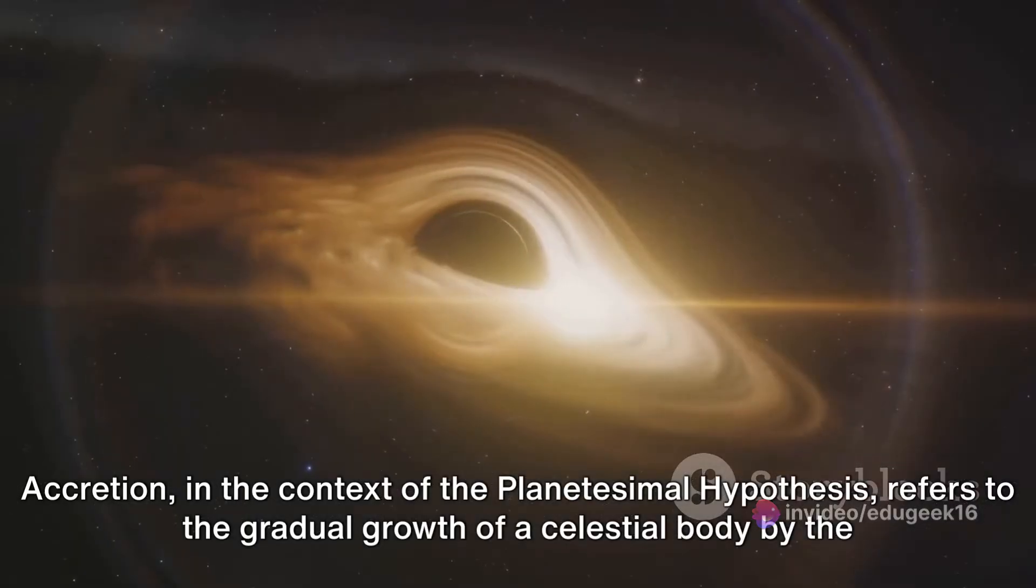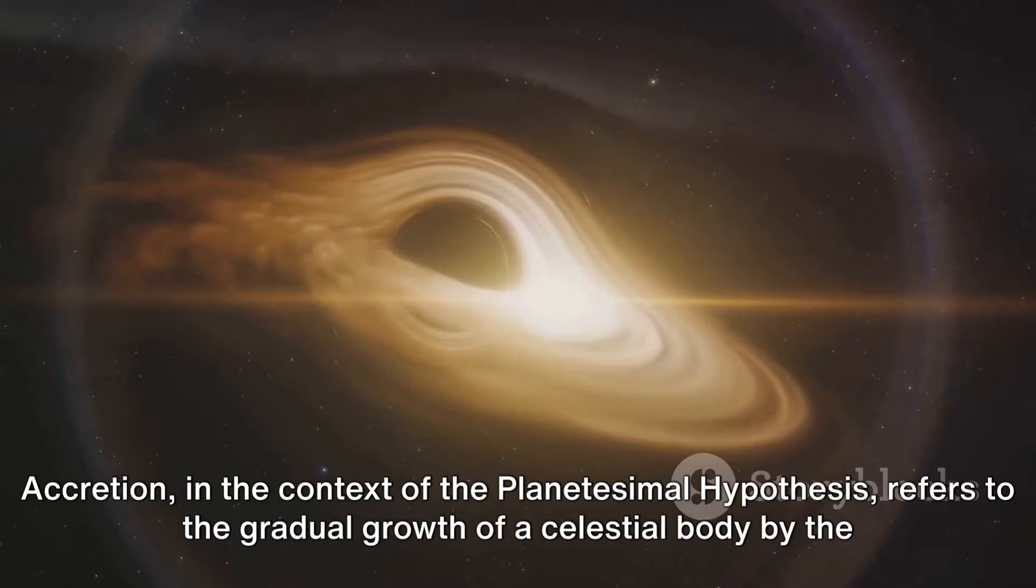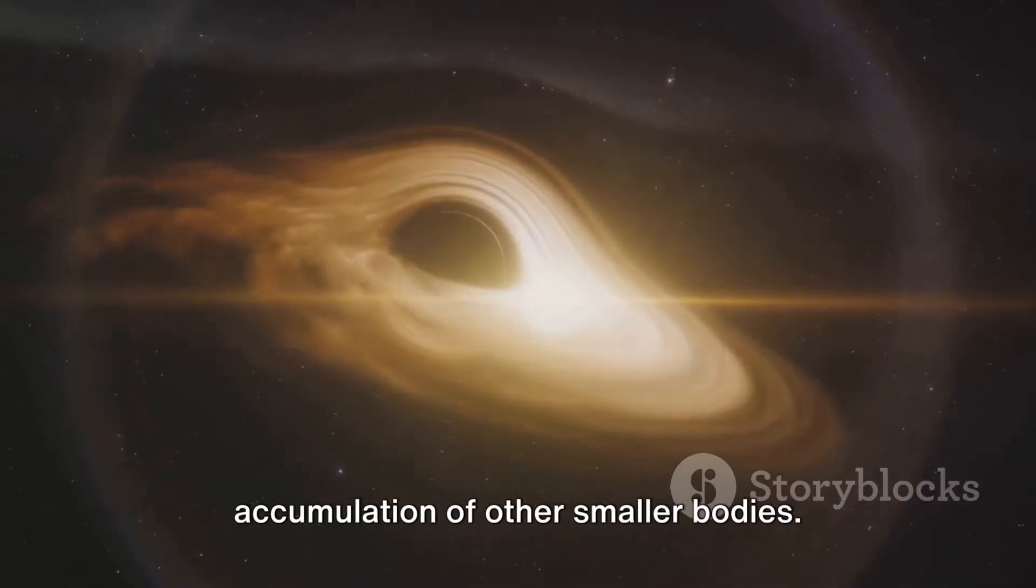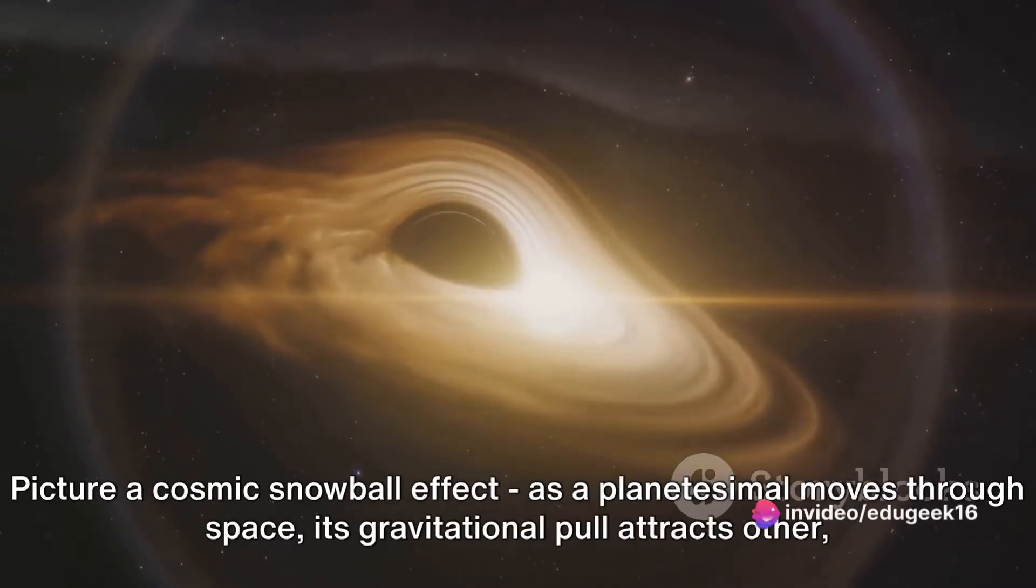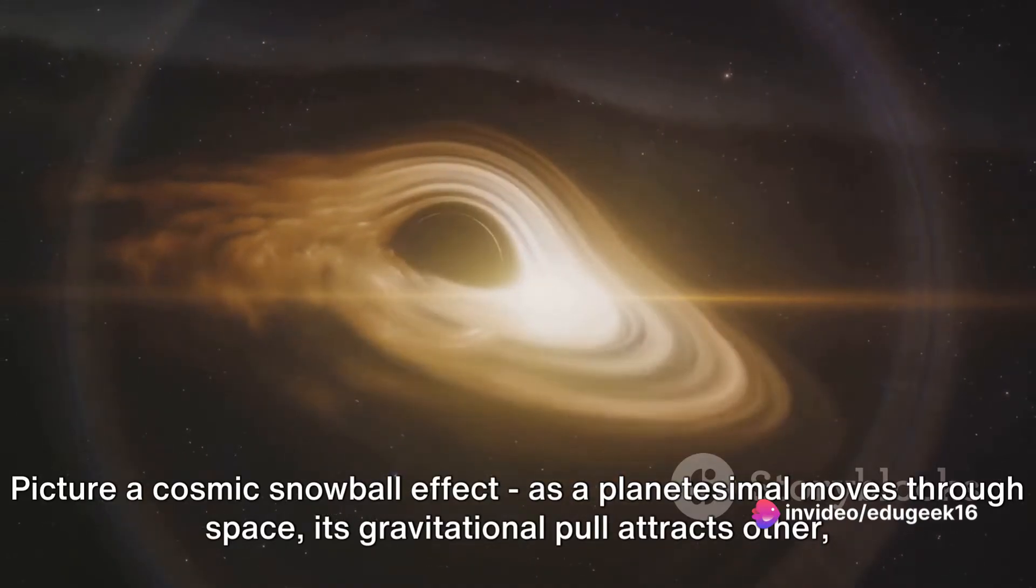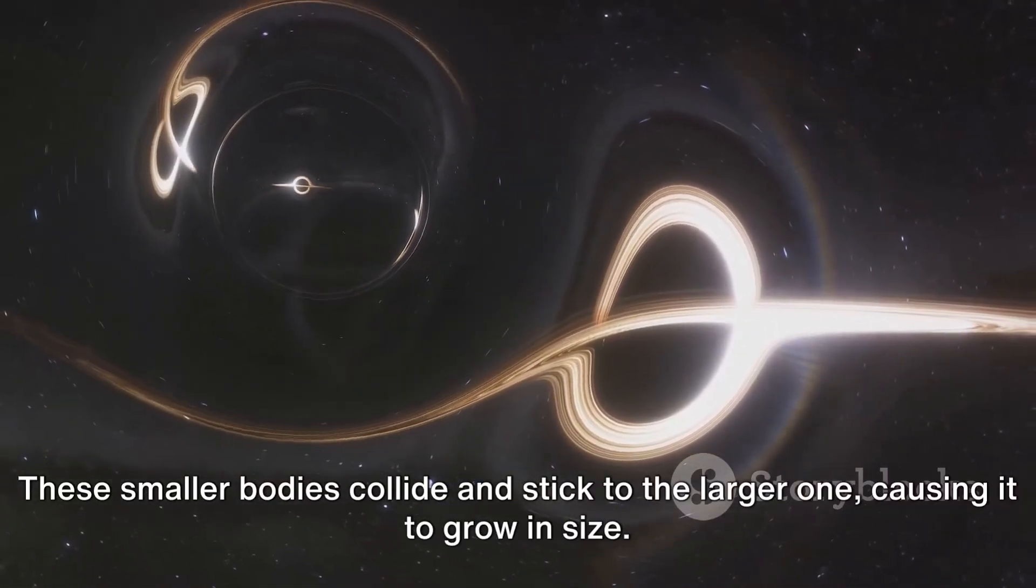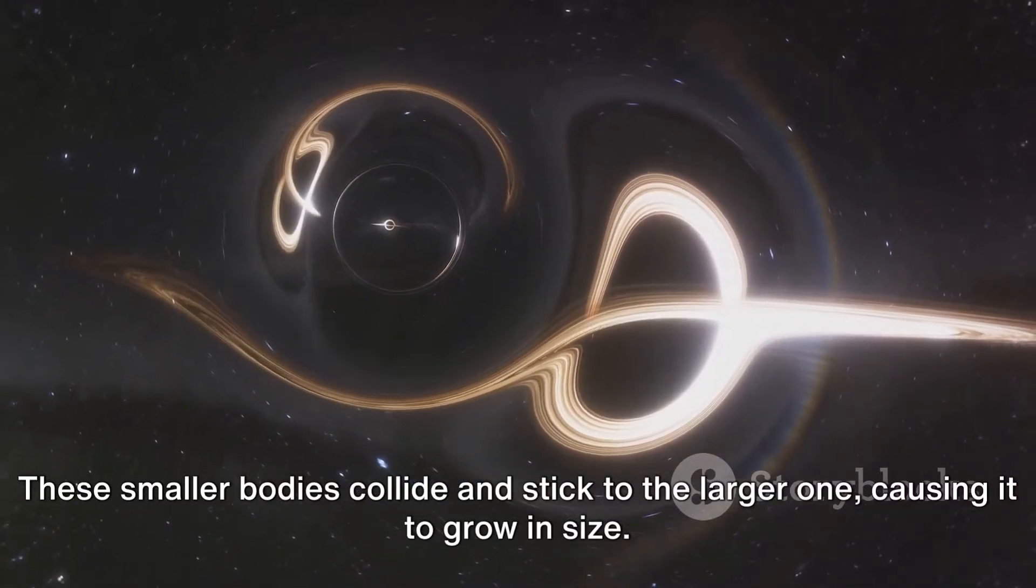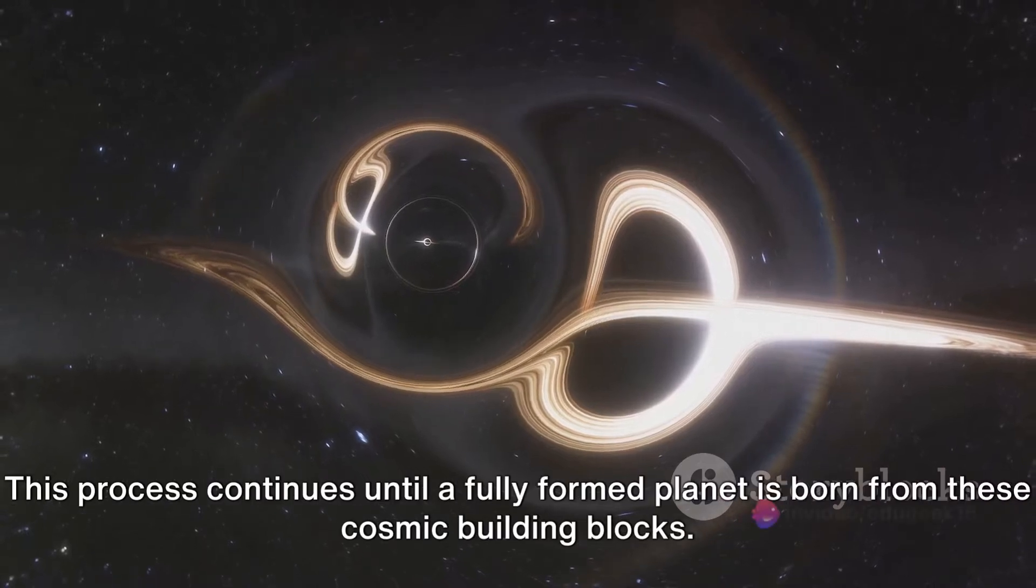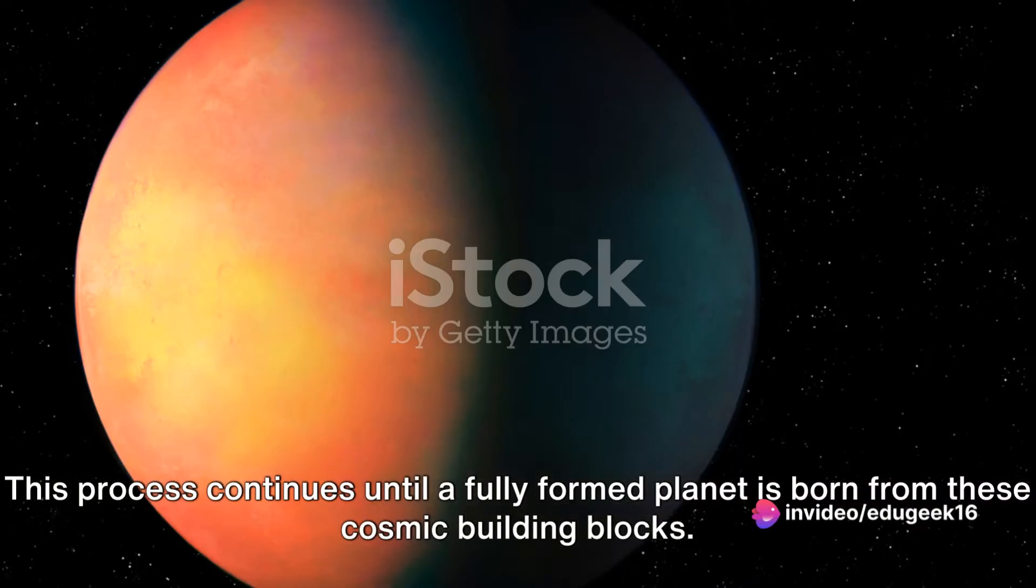Accretion, in the context of the planetesimal hypothesis, refers to the gradual growth of a celestial body by the accumulation of other smaller bodies. Picture a cosmic snowball effect. As a planetesimal moves through space, its gravitational pull attracts other smaller planetesimals. These smaller bodies collide and stick to the larger one, causing it to grow in size. This process continues until a fully formed planet is born from these cosmic building blocks.